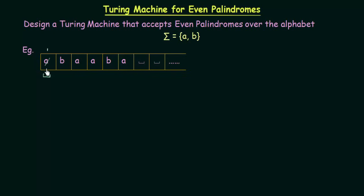This last symbol is an A, and the first symbol we read was also an A. Since both are A, we replace this A with a blank symbol. Now we keep moving to the left until we reach the beginning of the string — that is, until we encounter a blank symbol on the leftmost side. Remember, that original A is now a blank. When we encounter this blank on the left, we understand we have reached the leftmost position, so we move one step to the right and see a B.